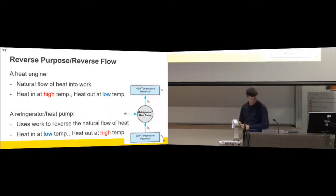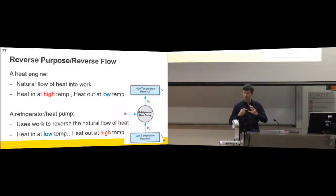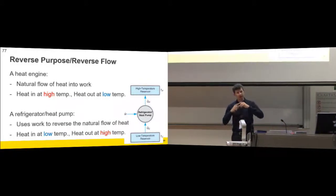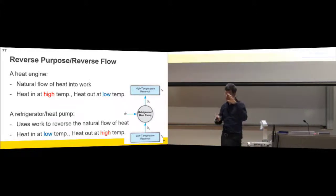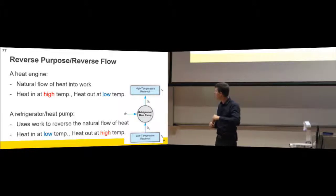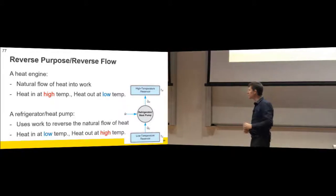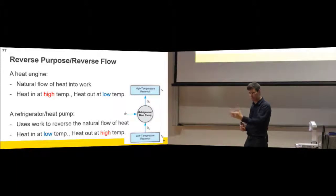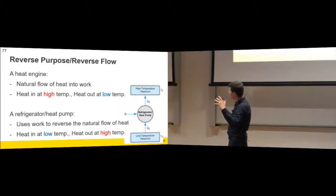For a heat engine, which is what we've done until now, we exploited a heat difference and the natural tendency of energy to want to flow from the hot place to the cold place. And we inserted a device between that and said, as the heat flows from the hot place to the cold place, let's get some work out of it as well. That was our heat engine principle: we took heat in at a high temperature, we rejected heat at a low temperature.